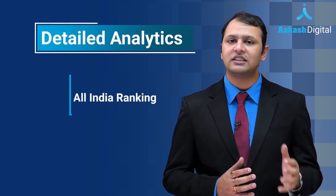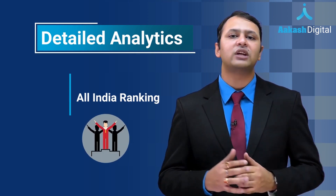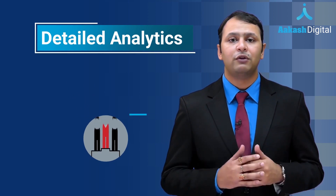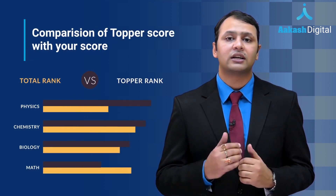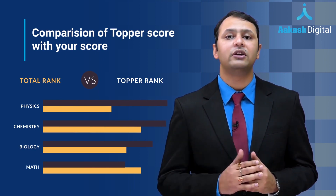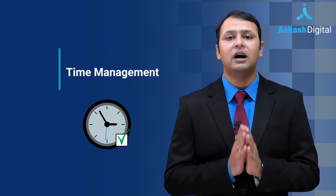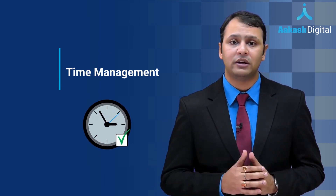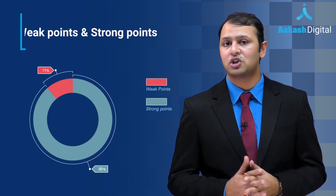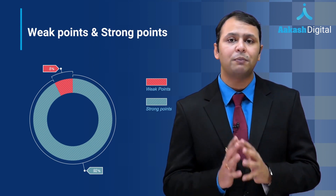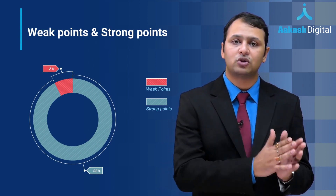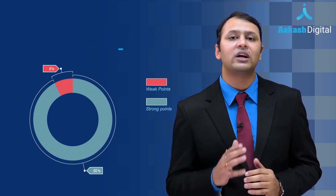What do we provide in the analytics? First, an All India Ranking to tell you where you stand in the nation. Second, we provide a comparison of your score with the topper's score so you can know the gap between the topper and yourself. We also provide time management analysis — for example, if both you and the topper marked a question correctly, the topper took 10 seconds while you took 50 seconds; that gap should not exist. Lastly, we provide exact insight into whether your whole chapter is weak — say, rotational motion — or only a specific topic like angular momentum, so you know your strong and weak areas and can excel.